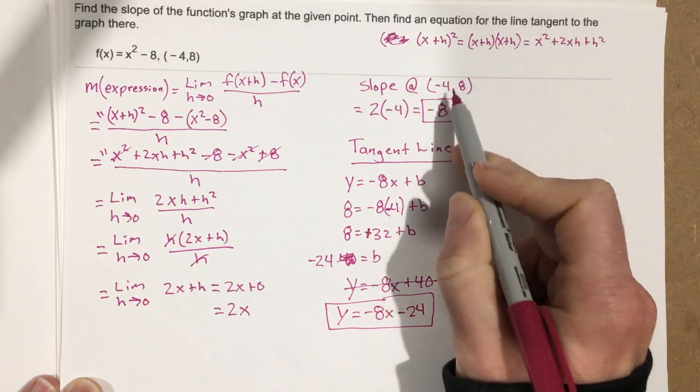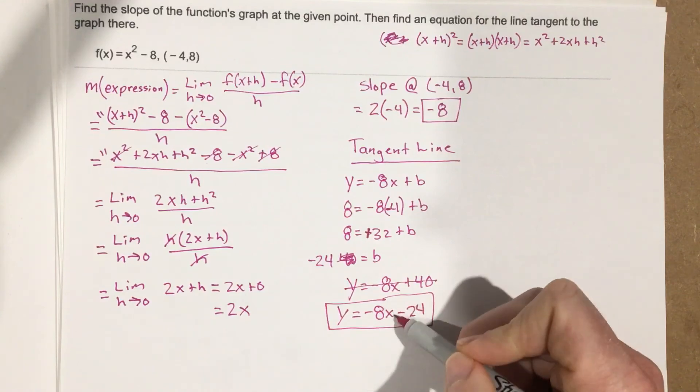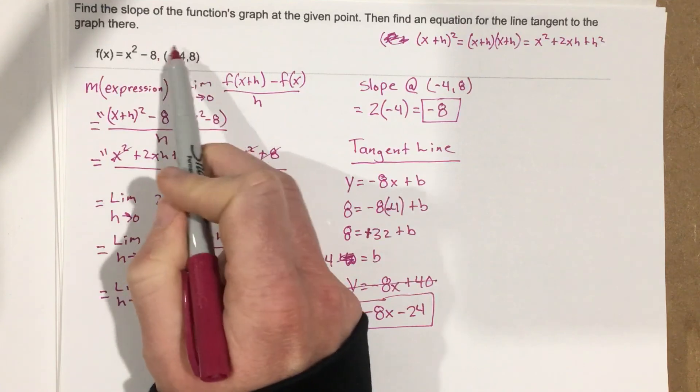Little mistake though, you got to watch out for when you plug this coordinate in, making sure you plug in the negative with it. So this is the tangent line for this function at this point.